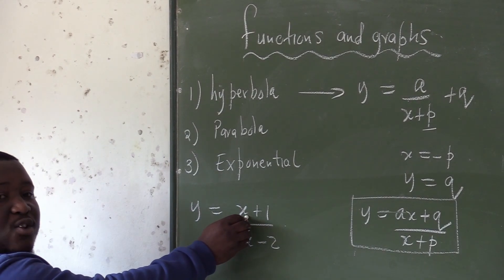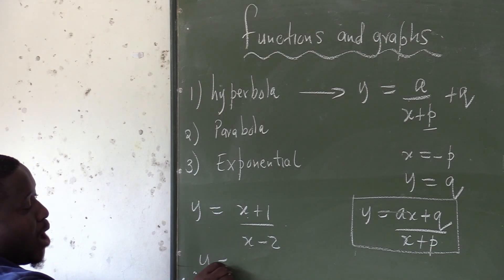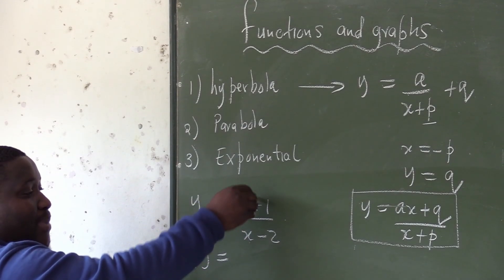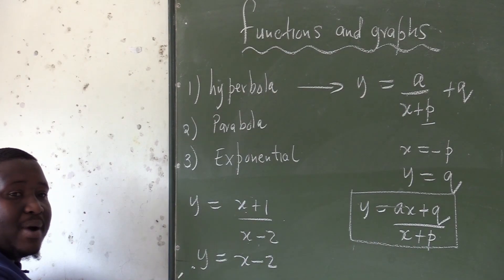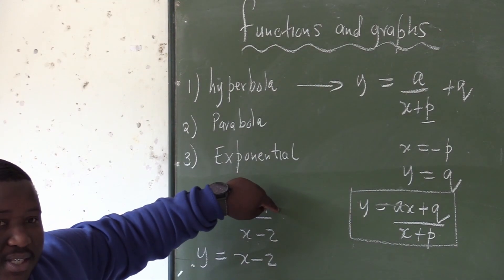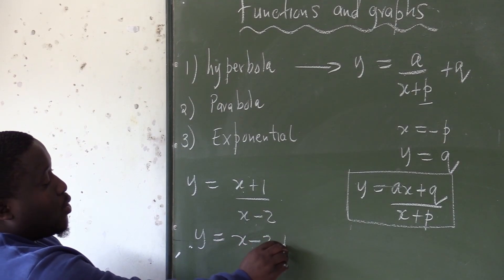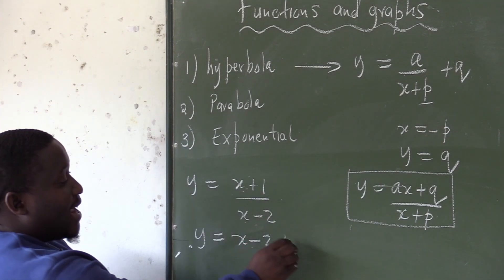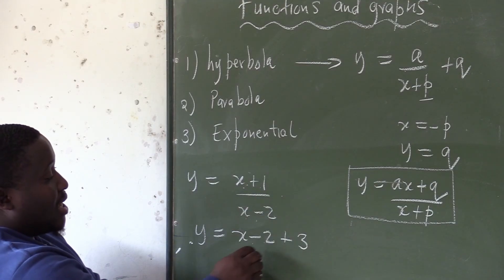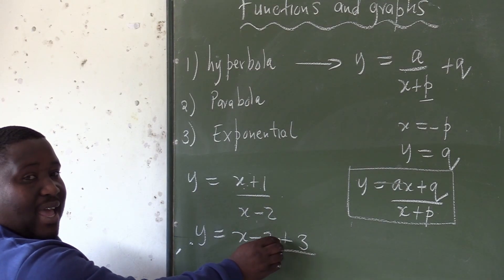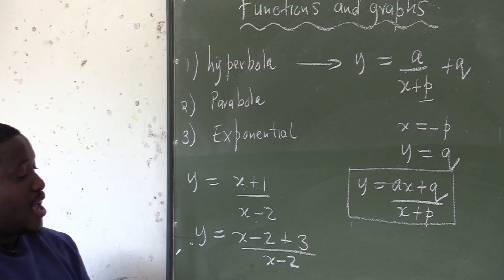We are going to express the numerator in terms of the denominator. We are going to say y equals to — we are going to see the denominator, so we write x minus 2. But remember, we do not want to change the numerator. We are going to say the numerator uses x minus 2, and I need to add 3 to go back to x plus 1, because negative 2 plus 3 takes you back to 1. So I have written the numerator in this form without changing it, then return the denominator as x minus 2.